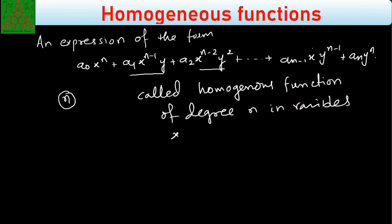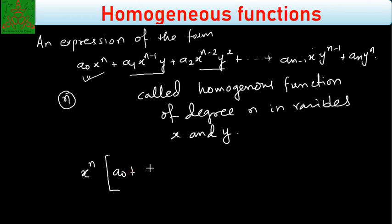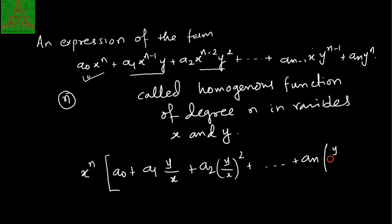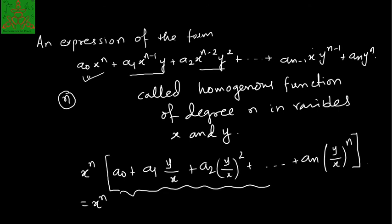In variable x and y. This expression — you can factor out xⁿ — so that can be written in the form of xⁿ(a₀ + a₁(y/x) + a₂(y/x)² + ... + aₙ(y/x)ⁿ). So this is nothing but xⁿ times some function which is a function of y/x, that is φ(y/x).